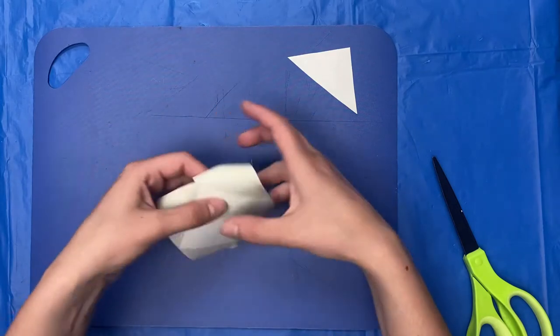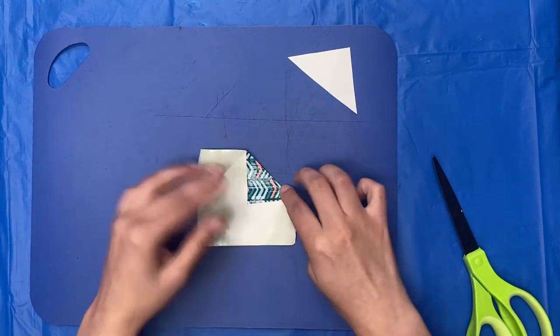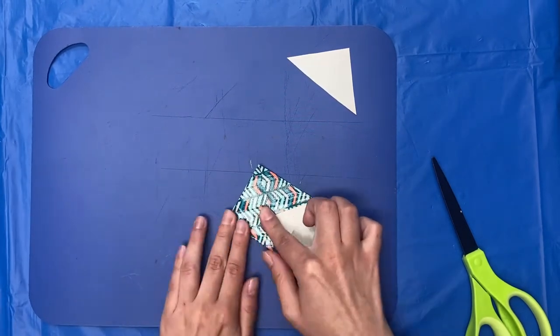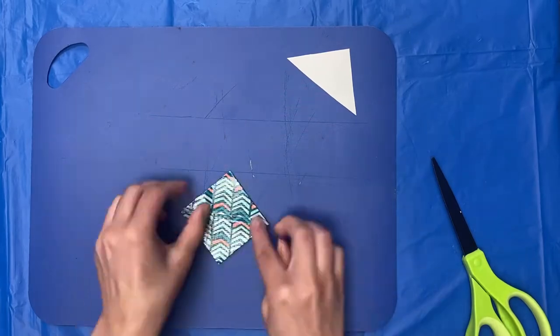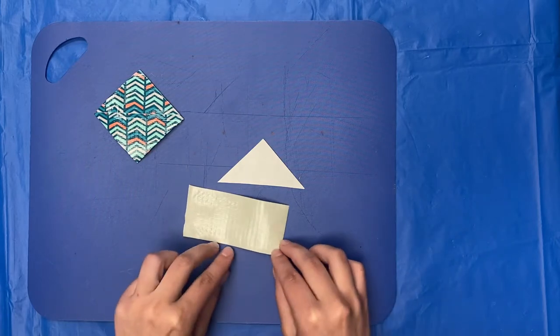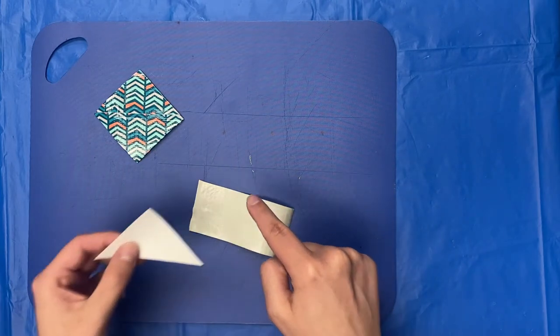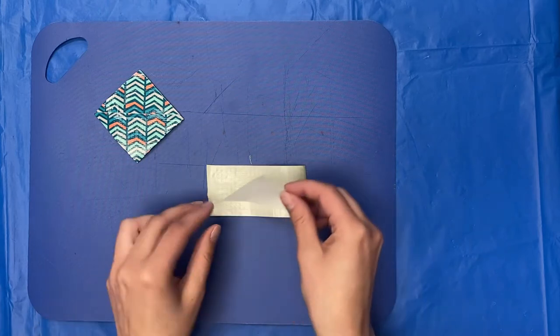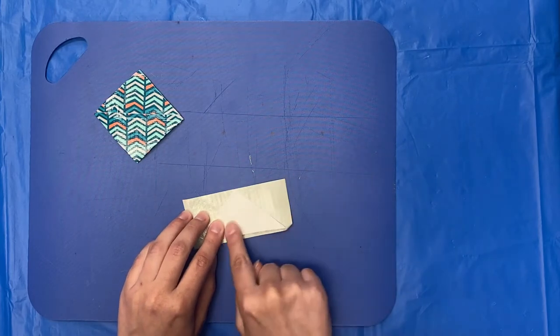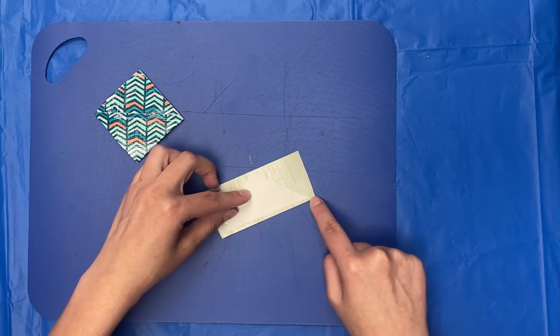Flip it over and fold down the corners. Cut another piece of tape and place it sticky side up. Take your triangle and line up the top with the top of the tape. There should be a strip along the bottom. Fold that up.